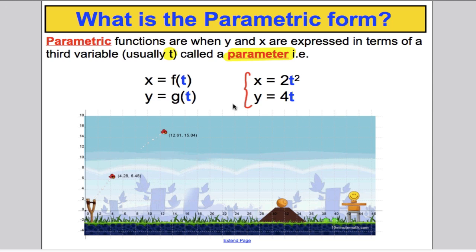What makes parametric functions different is that the x and the y coordinates are given in terms of some equation of a third parameter, t. Now, why is this helpful to us? Let's take a look at an angry bird scenario. You pull the elastic band back, the angry bird gets flown in the air and is trying to hit a target. At any point, say at this point here, this bird has an x-coordinate and a y-coordinate.